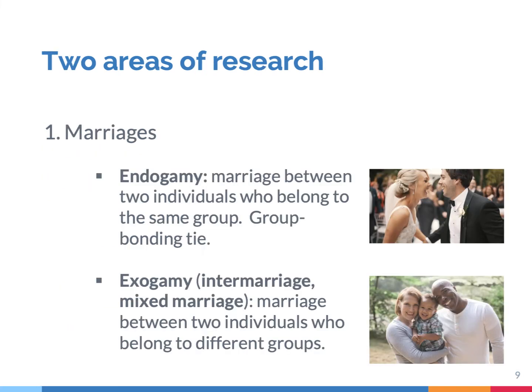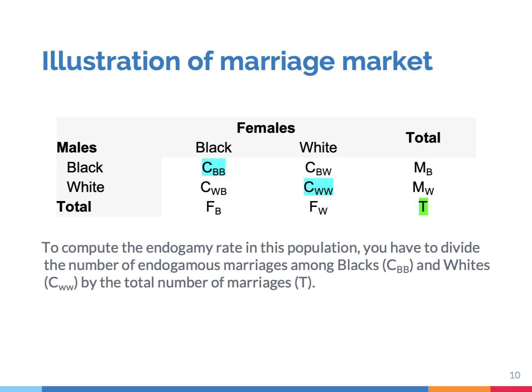So how could we empirically study these various dimensions of segregation? Scholars often look at two areas. First, they study marriages. Scholars make a distinction between endogamy and exogamy. Endogamy is a marriage with someone from their own group — a group bonding tie. Exogamy is a marriage with someone from another group — a group bridging tie. With a marriage market table, you can compute the endogamy rate by dividing the number of endogamous marriages by the total number of marriages. Group segregation is strong when endogamy is common, meaning many people marry a partner from their own group, and weaker when exogamy is common.